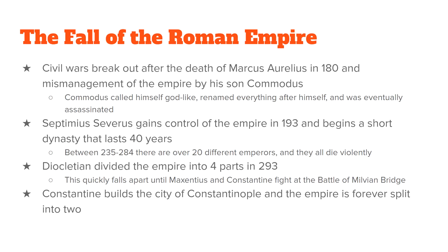In 193 AD, a man named Septimius Severus took control of the government. His control was very short as well. Between 235 and 284 there were 20 different emperors — nobody lasted for very long.